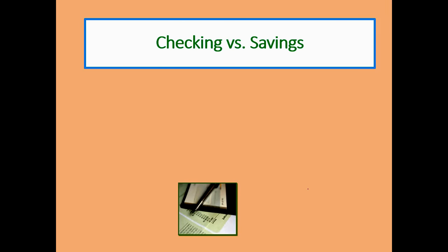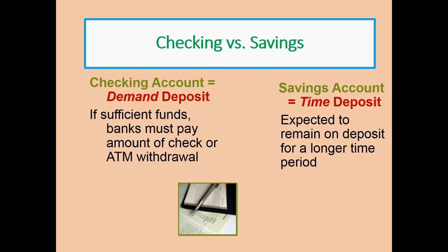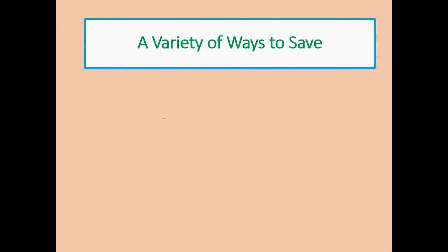Now let's think about ways to save your money. Checking accounts are also called demand deposit accounts — the bank must pay you out with no penalty and no delay when you have sufficient funds. Savings accounts are called time deposits because the expectation is you won't touch the money for a period of time. Banks entice us to keep money in time deposits by paying interest — savings accounts currently pay around 0.01–0.02%. Banks may also impose penalties for too many withdrawals or dropping below a minimum balance, but those accounts typically offer the highest interest rates.